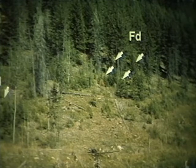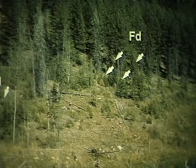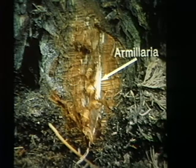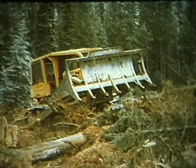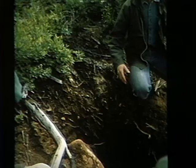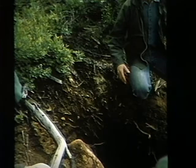Young trees such as Douglas fir might be common and appear healthy in an infection center, but they probably will die eventually. On some interior sites where all tree species, including even those more resistant such as western red cedar, are attacked by Armillaria, mechanical removal of infected stumps from good quality sites is one treatment option. Sites must be examined carefully both before and after harvesting to ensure that the soil is suitable for the operation of heavy machinery.